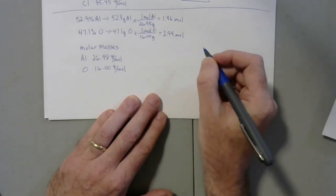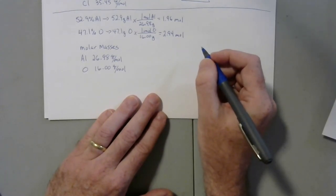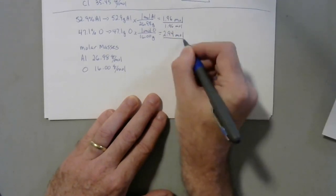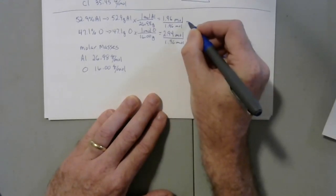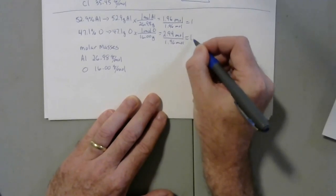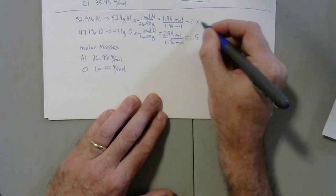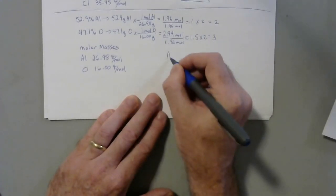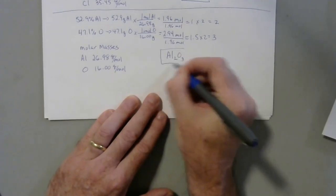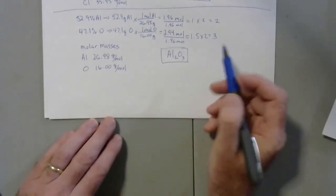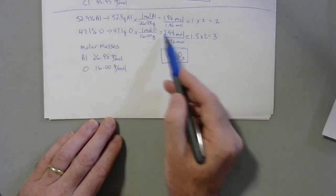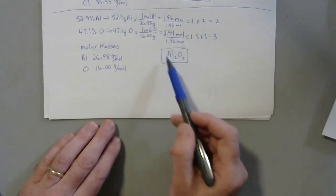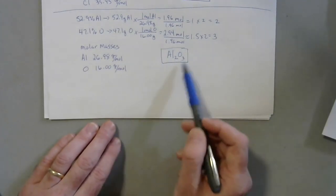We can see we're close to 2 and 3, which ends up being the subscripts. But let's go ahead and work through it all. We divide both sides by 1.96 moles — the smallest — which gives us 1 for aluminum and about 1.5 for oxygen. So we multiply by 2 to get rid of the half, giving us 2 and 3, which gives us our formula of Al2O3 as our final answer. It turns out 100 grams is close to the molar mass of aluminum oxide, which is why we were already close before doing the mole ratio.